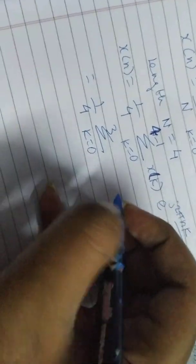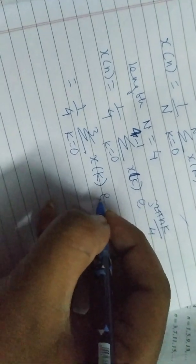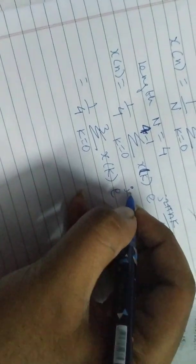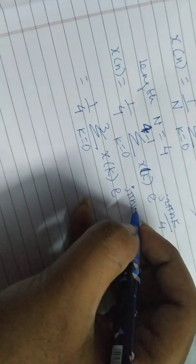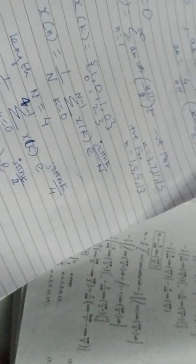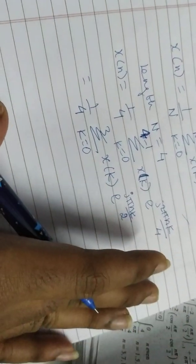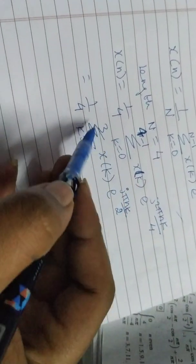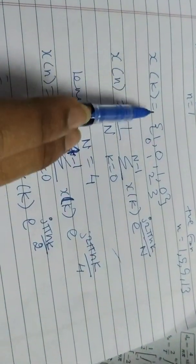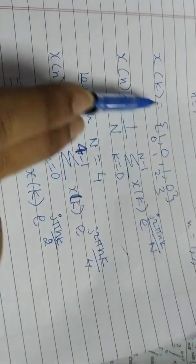Which is 1 over 4 summation from k equals 0 to 3 of x of k times e to the power j 2 pi n k by 4. Now all we have to do is expand the summation and substitute the values of k at 0, 1, 2, and 3.